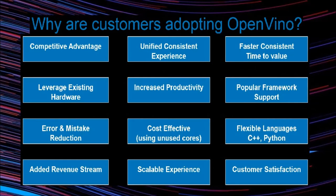There are a number of reasons why AI enthusiasts are adopting OpenVINO. Among these reasons is a user's ability to oftentimes leverage existing idle processing cores deployed in the field to potentially run additional workloads, often coupled with new added revenue streams. OpenVINO also provides a unified consistent experience across Intel processors and offload acceleration cards, supporting popular programming languages like C++ and Python, along with mainstream AI frameworks like TensorFlow, Caffe, and MXNet.